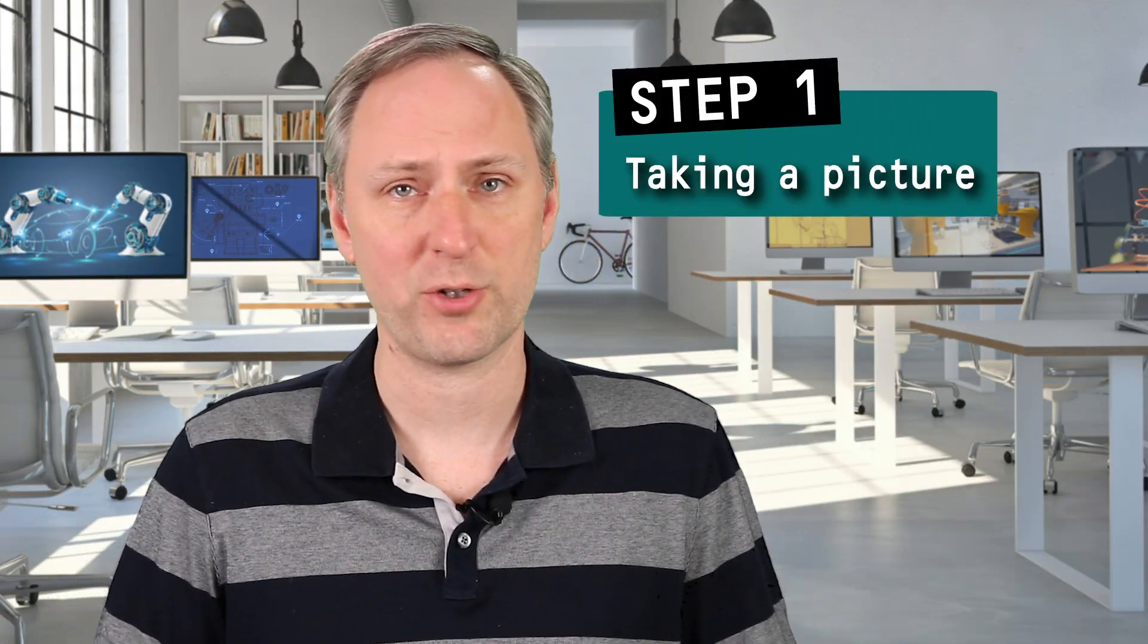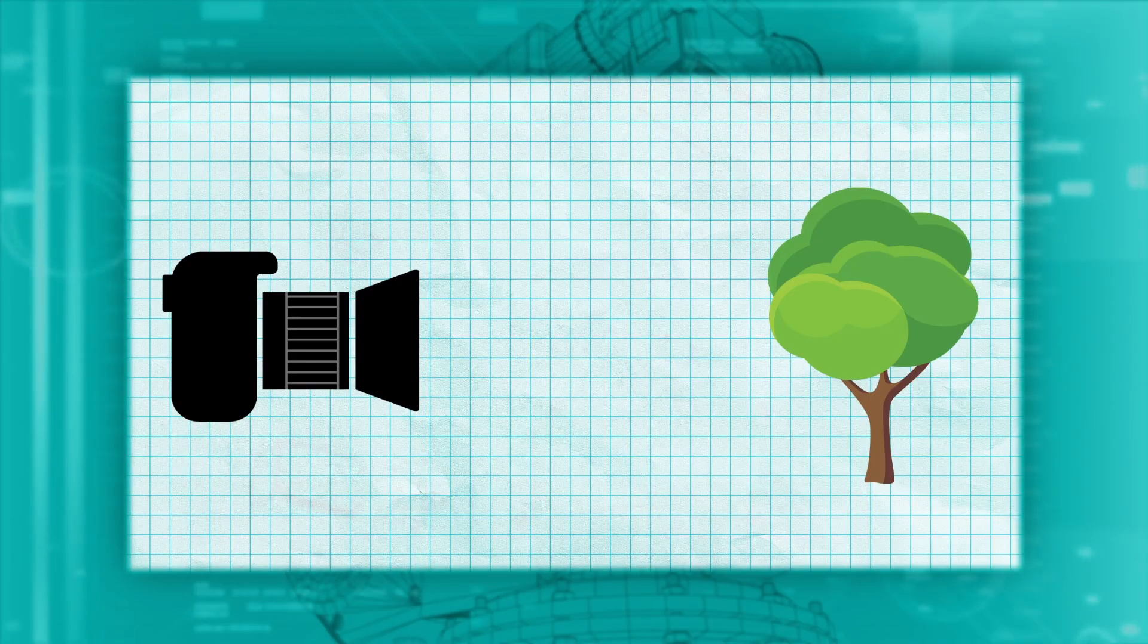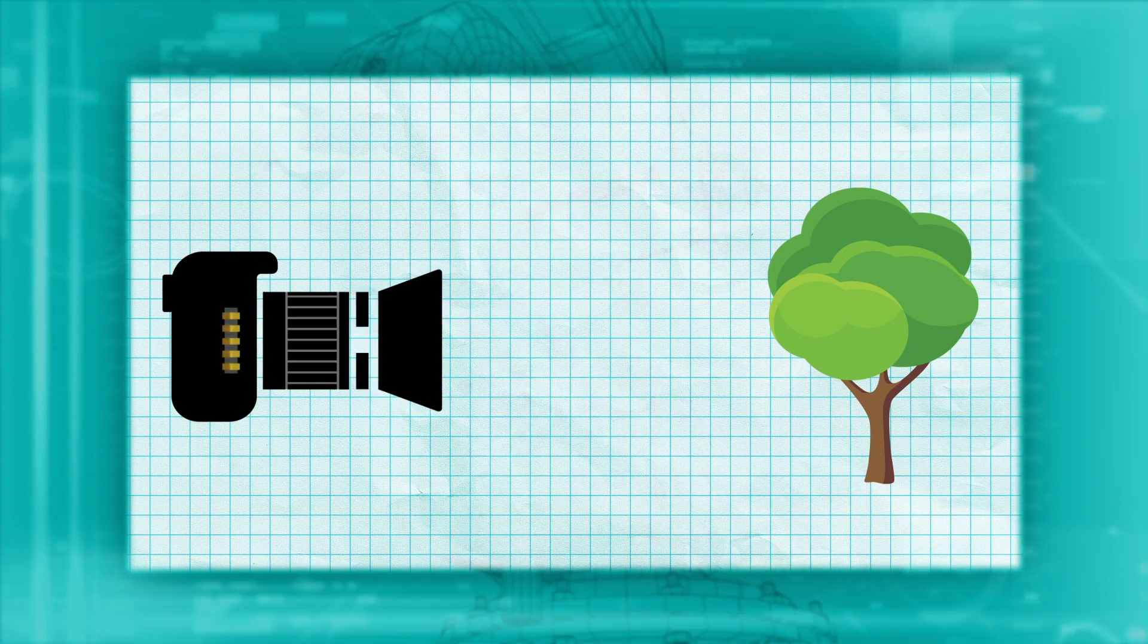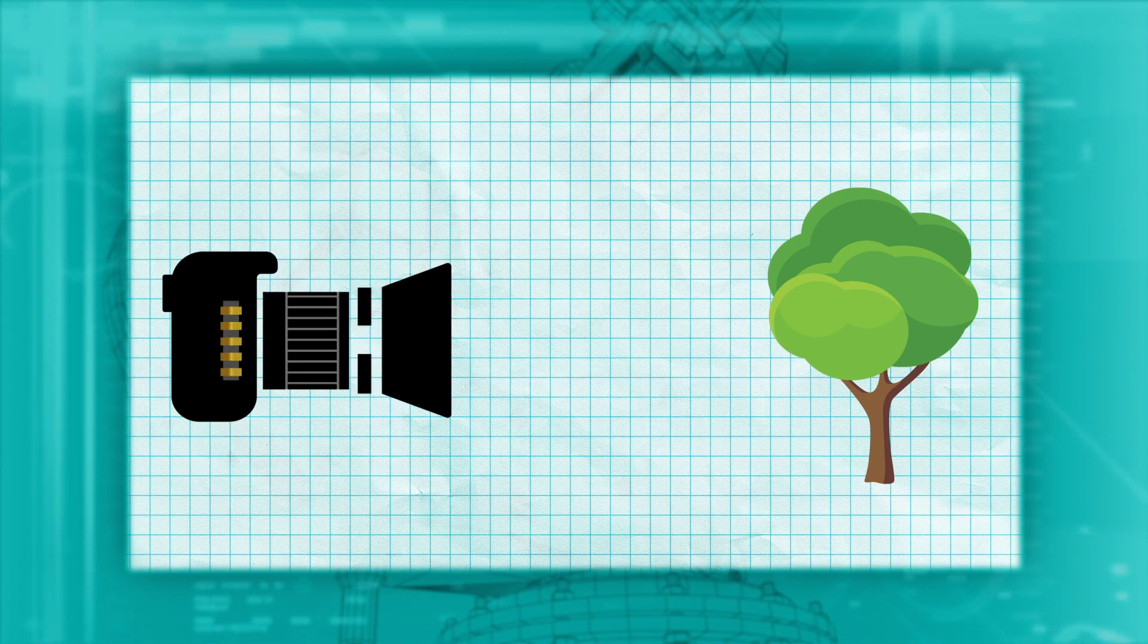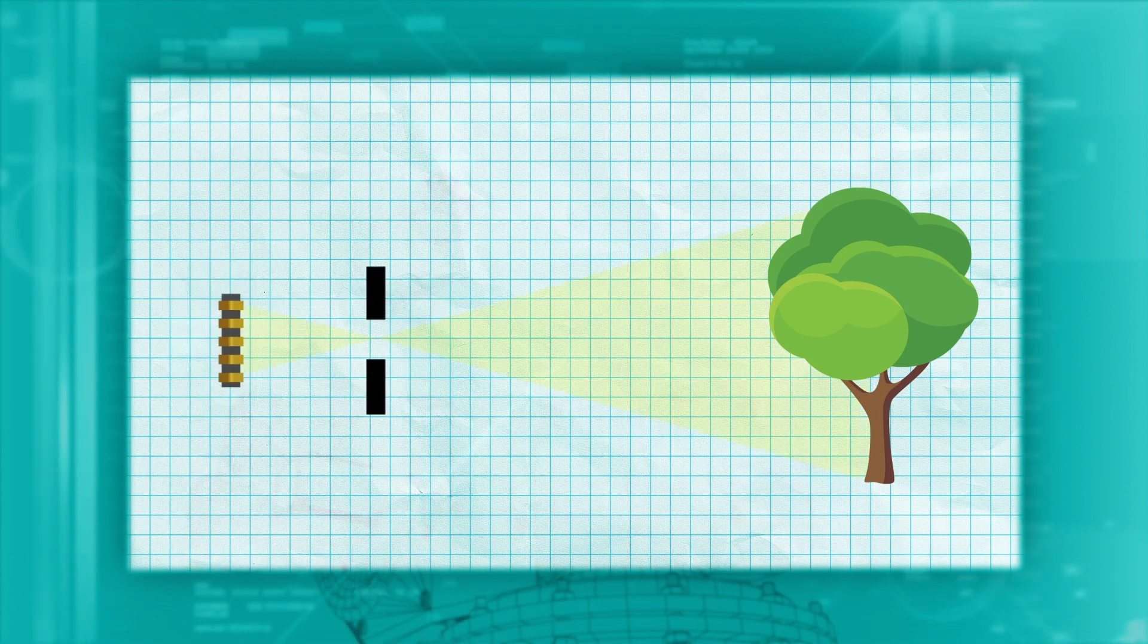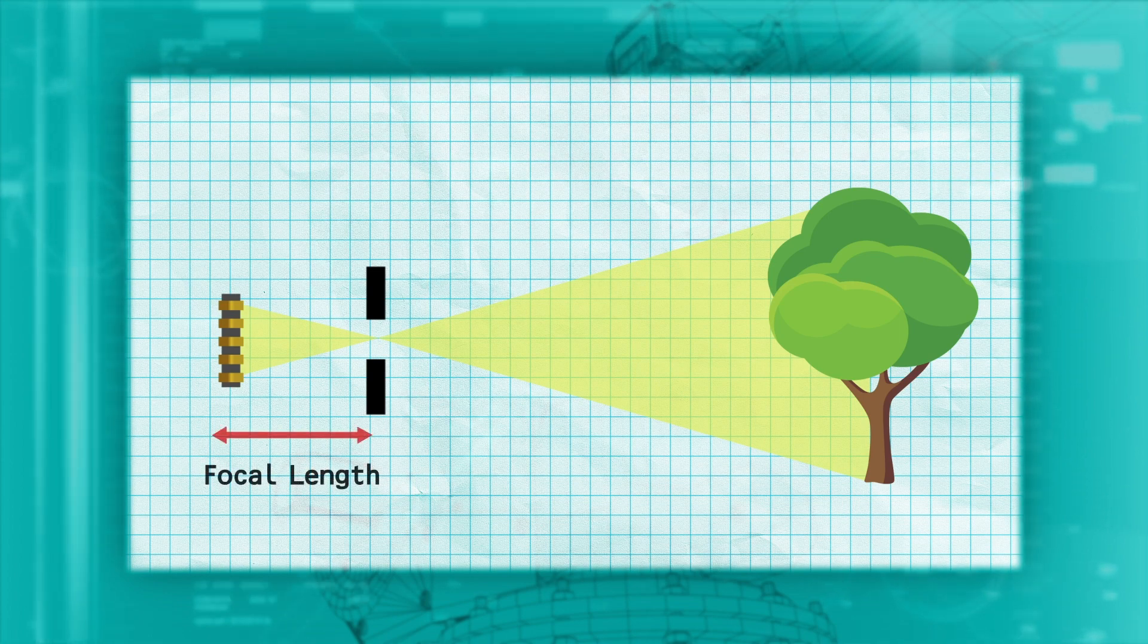Now, let's look at an example to see how we accomplish our first step, taking a picture. We have our camera and an object, in this case a tree. If we look inside the camera, we can see the sensor and the lens. Imagine the lens as a simple pinhole, and we can see that the image is formed on the sensor at the focal length from the pinhole.